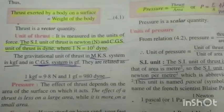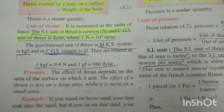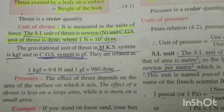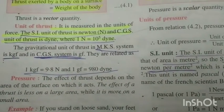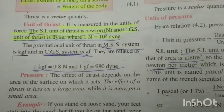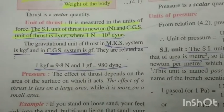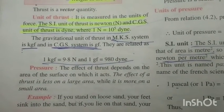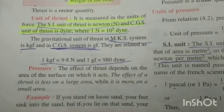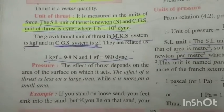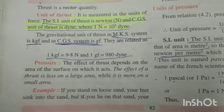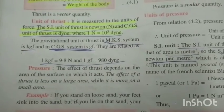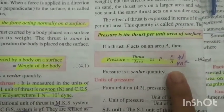The same concept applies to school bags — why do school bags have a broader strip? Because it doesn't produce more pressure on your shoulder. More the area, less the pressure. If you use a rope instead of a broad strip, it will hurt you because small area means more thrust — that's the concept of pressure.